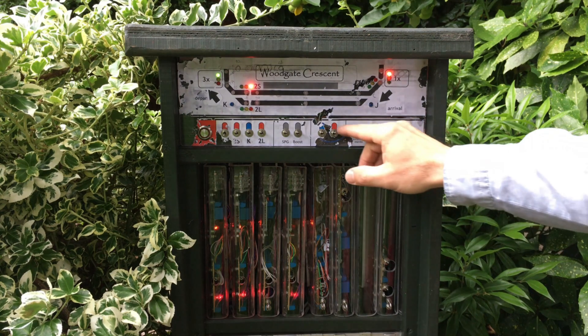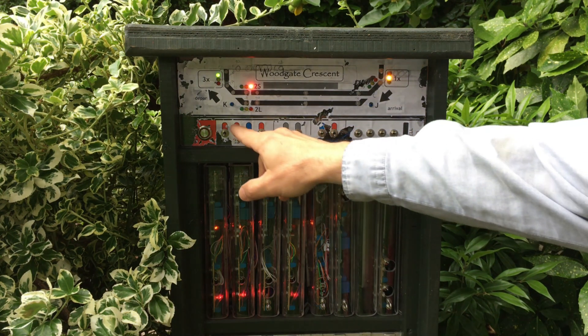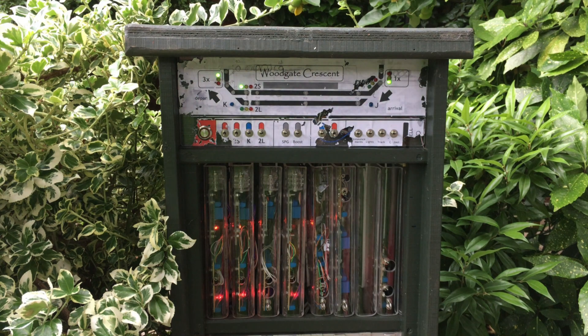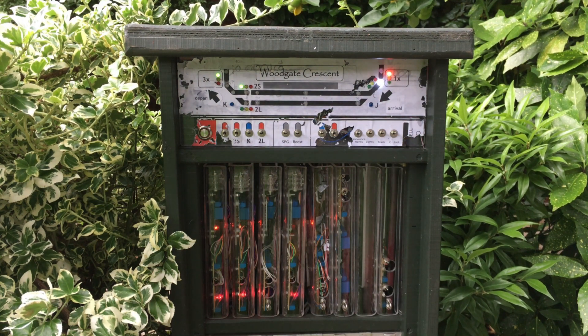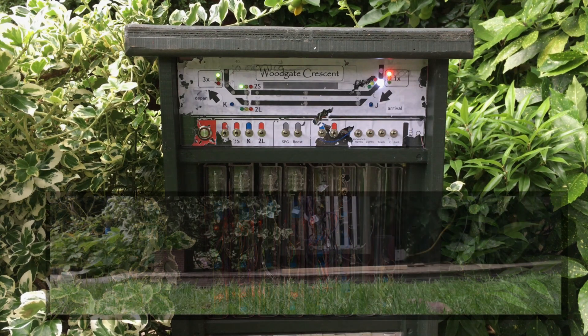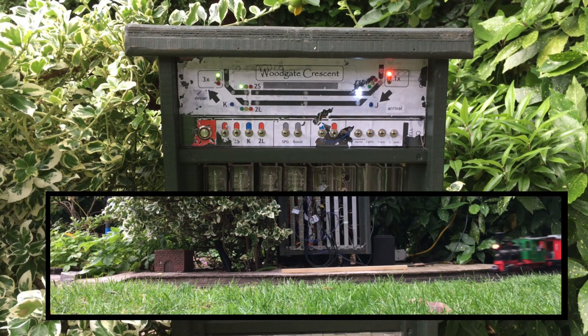Woodgate Crescent Station area has four block section control modules. In this set of sequences which I filmed last year, three of the modules are managing the movement of the train as it enters the station area through to as it leaves.